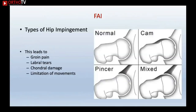There are different types of hip impingement. One is the cam type, which is on the femoral side. The second is the pincer type, which is acetabular overgrowth. The third is the mixed combined cam and pincer type.